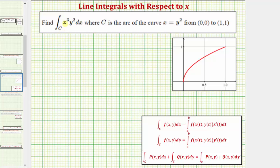We want to evaluate the line integral of x cubed y squared along the curve C with respect to x. Notice that for this line integral, we are not integrating with respect to s or arc length, we're integrating only with respect to x, where the curve C is the arc of the curve x equals y squared from the point (0,0) to the point (1,1).